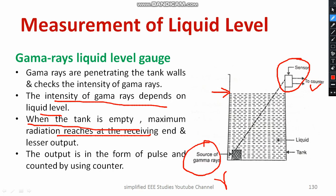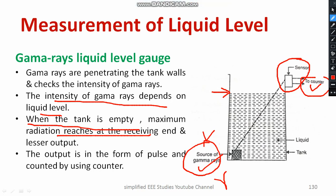When the liquid level is high, less gamma rays reach the receiving end, so the counter reading will be different. Based on the water level, the quantity of gamma rays reaching the sensor is reduced. If the water level is low, maximum gamma rays reach the sensor and the counter reads higher. This method is known as the gamma ray liquid level gauge, where the key parameter is the quantity of gamma rays received at the receiving end.